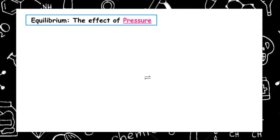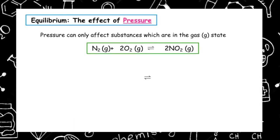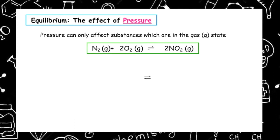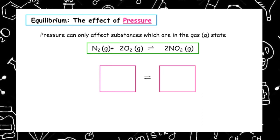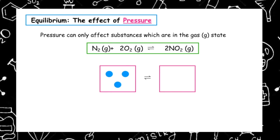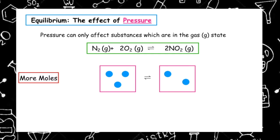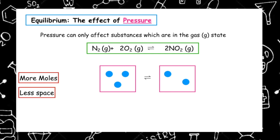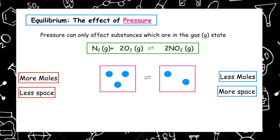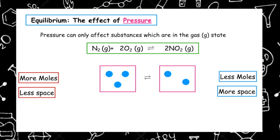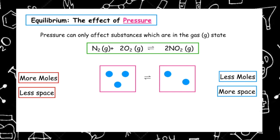The next factor we're going to investigate is the effect of pressure. Pressure can only affect substances which are in the gas state. Here we've got the same equilibrium, and we draw a box to represent the reactant particles and a box to represent the product particles. On the reactant side we have one mole of nitrogen and two moles of oxygen — a total of three moles of gas. On the product side we have two moles of gas. So on the left-hand side there are more moles of gas and less space; on the right-hand side there are fewer moles and more space.